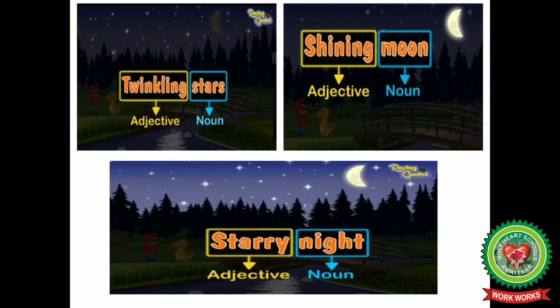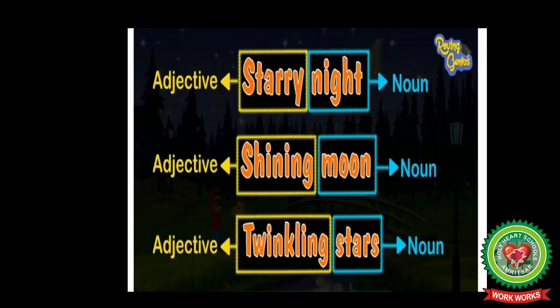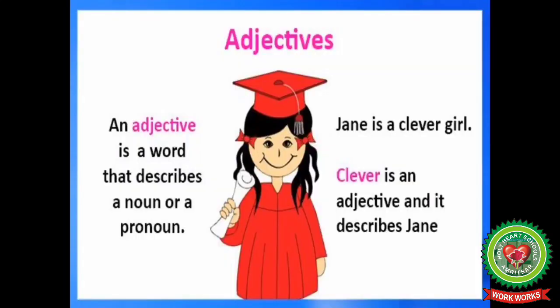Observe these examples carefully. Twinkling stars — 'stars' is a naming word, a noun. Twinkling describes the noun 'stars', so 'twinkling' is an adjective. Shining moon — 'moon' is a noun, and 'shining' describes the noun 'moon', so 'shining' is an adjective. Starry night — 'night' is a noun, and 'starry' describes it, so 'starry' is an adjective. So starry, shining, and twinkling all describe nouns — these are adjectives.